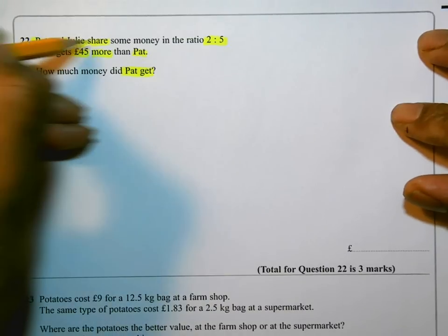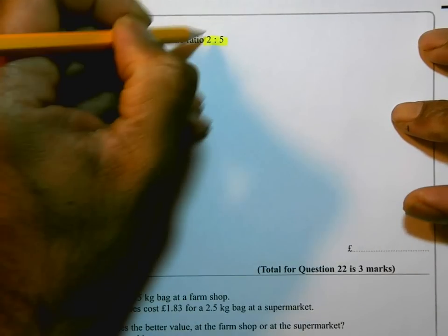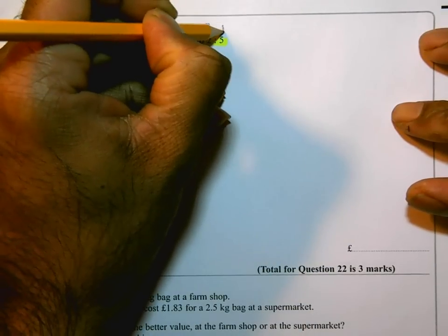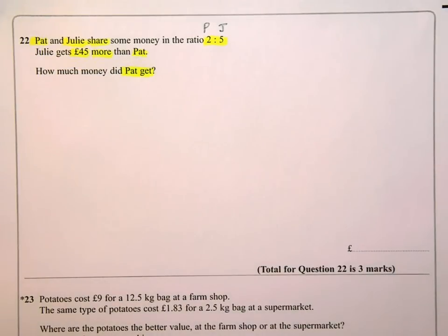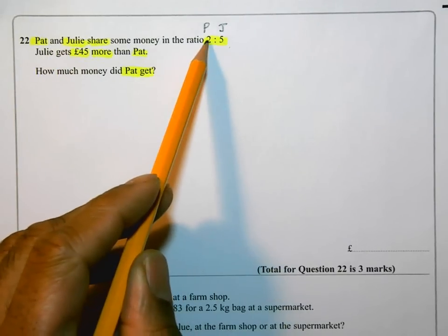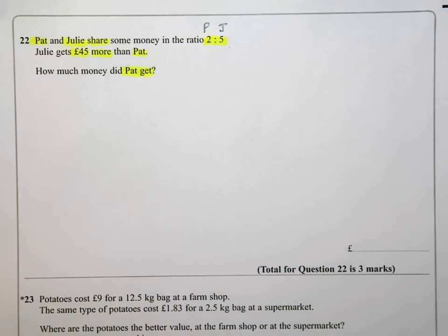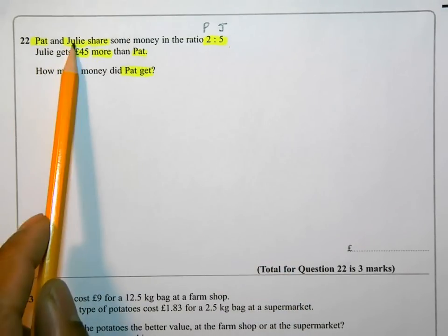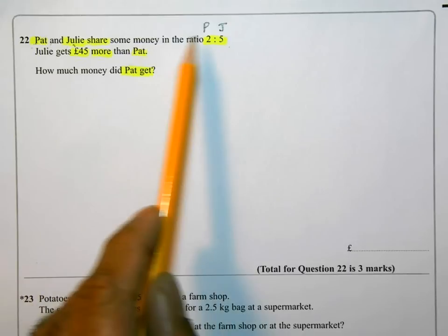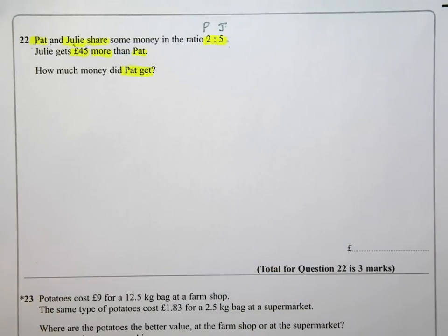Pat and Julie share some money in the ratio 2:5. One of the first things I do is put down the letters on top of each of the numbers in the ratio to tell me who's getting what. Pat is going to get the 2 parts, Julie is going to get the 5 parts, because it's in the order in which the names are written.